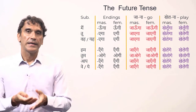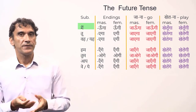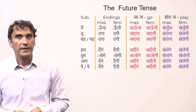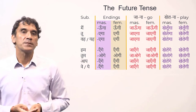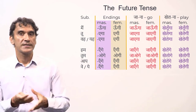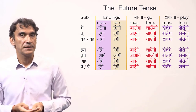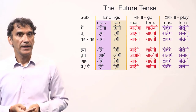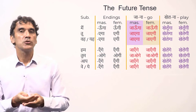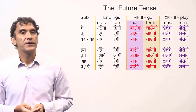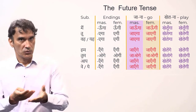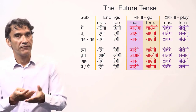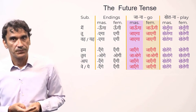Here is the table for the future tense. In the first column there are subject pronouns. The next two columns have the future tense endings — first the masculine, then feminine. In the next two columns we take the verb 'jana' (to go) and show all the future tense forms in masculine and feminine gender.